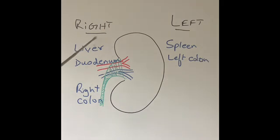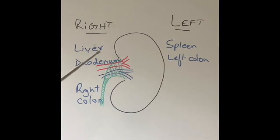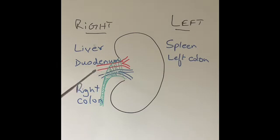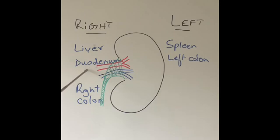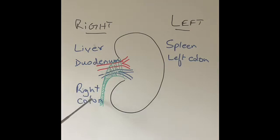On the right side, the spleen, left colon, and tail of the pancreas are far away, so they can't be close to our right kidney. On the right side, we have the liver, which is very close to our right kidney. The duodenum also lies very close to the right kidney — if you're not sure what the duodenum is, please watch my video on the anatomy of our digestive tract. The right side of our colon also lies very close to the right kidney.